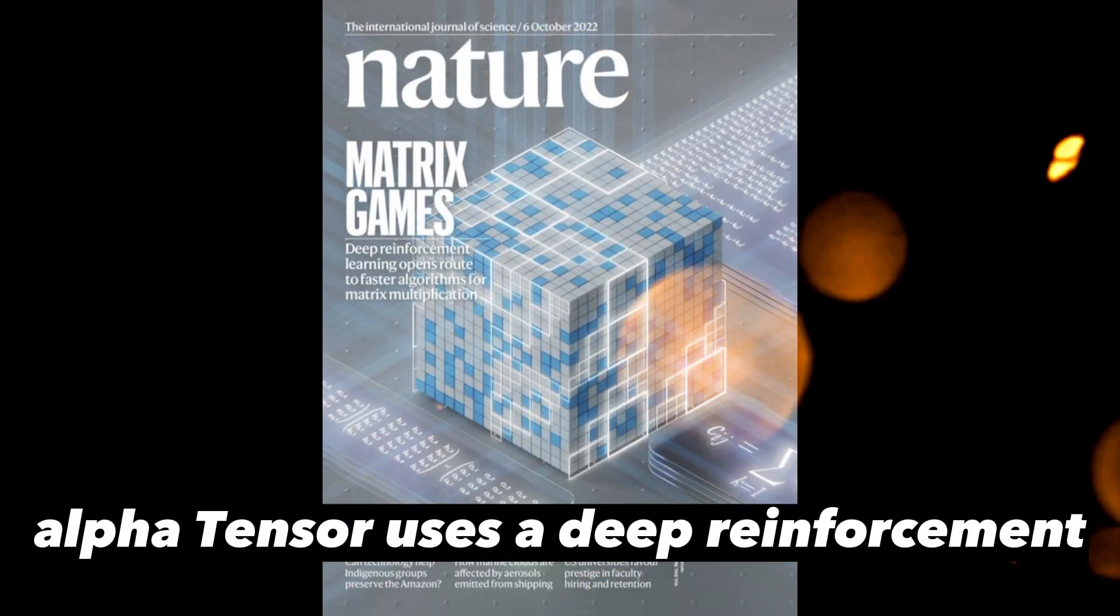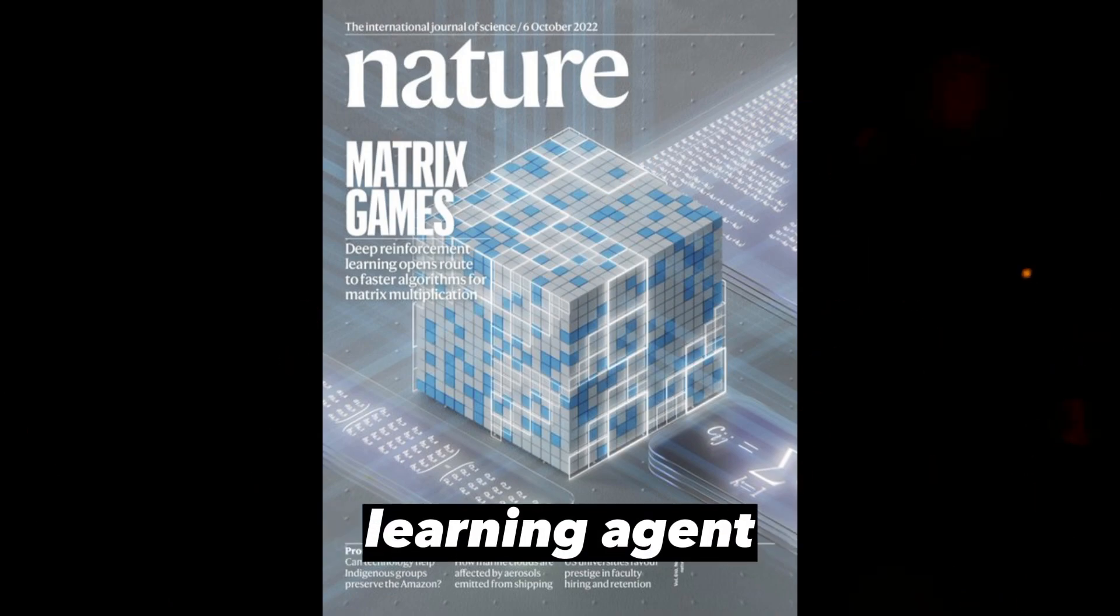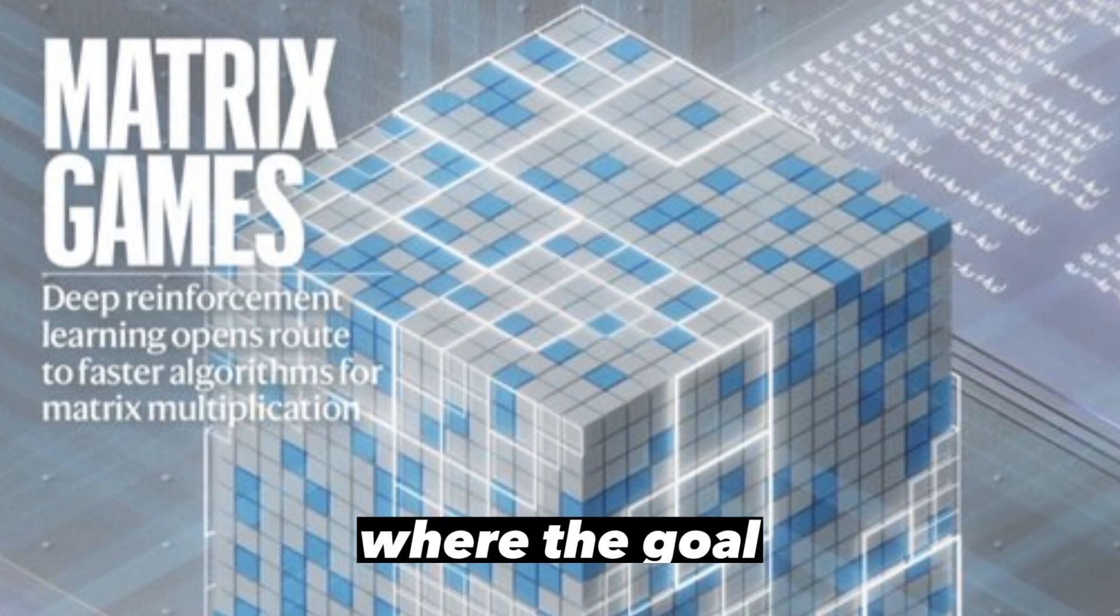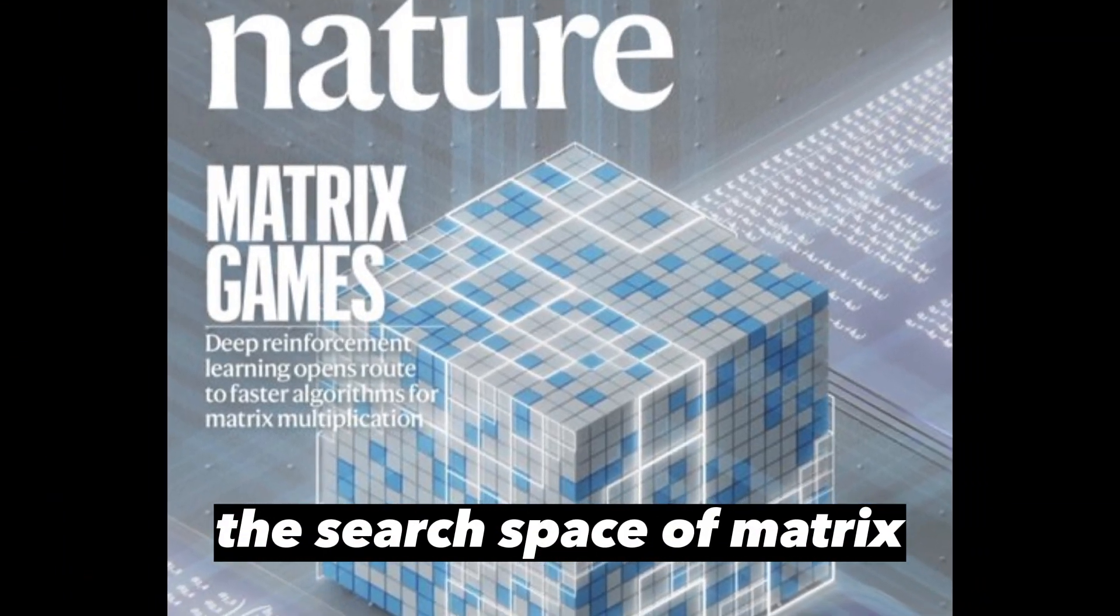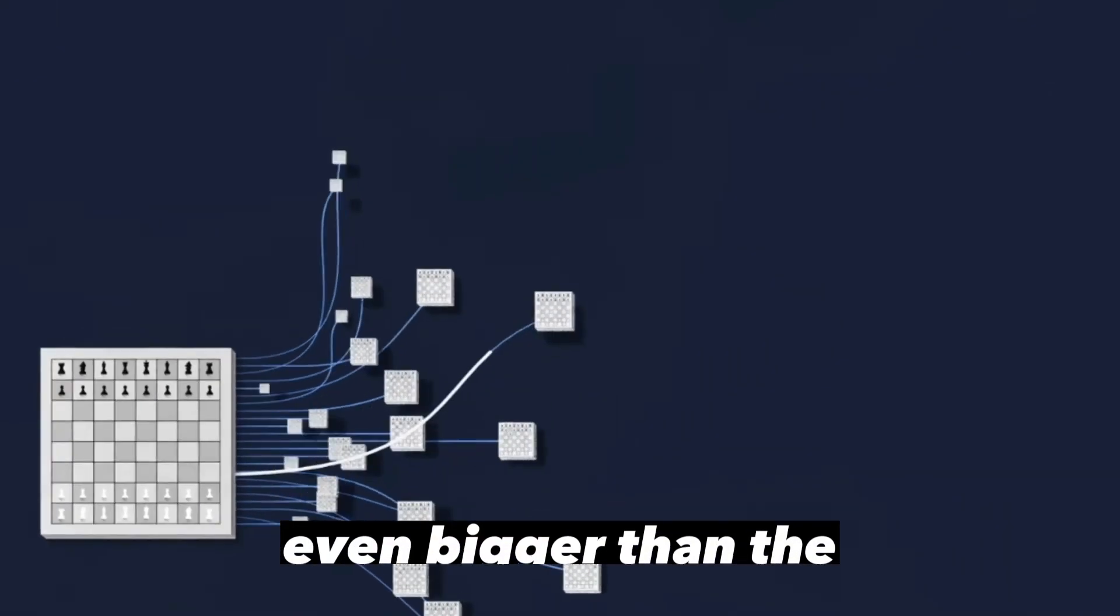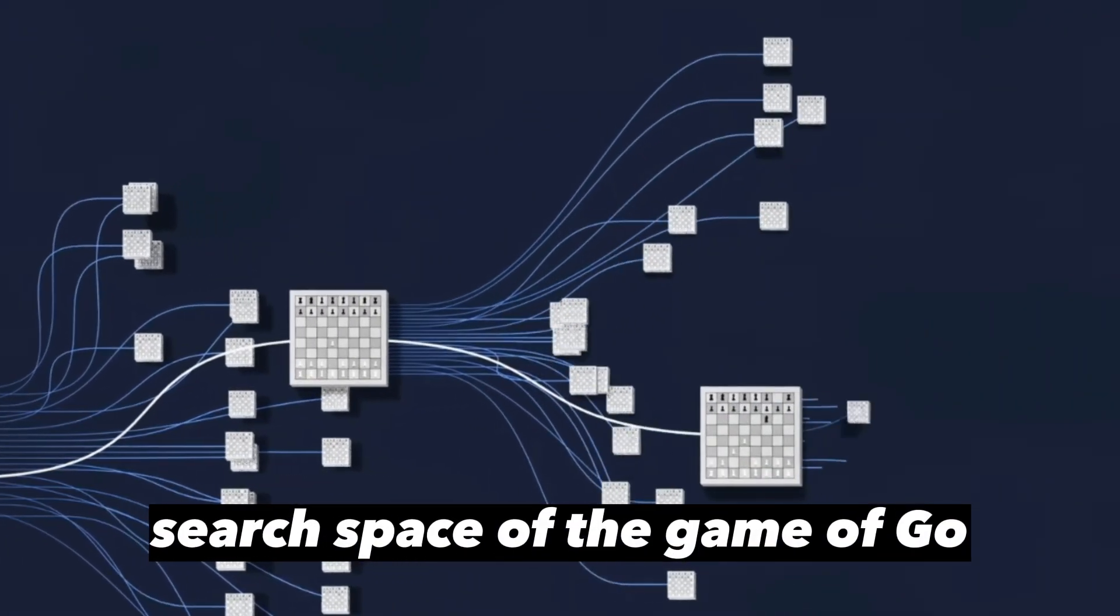AlphaTensor uses a deep reinforcement learning agent to play a game where the goal is to find a matrix multiplication algorithm. The search space of matrix multiplication is huge, even bigger than the search space of the game of Go.